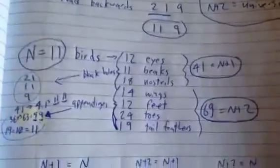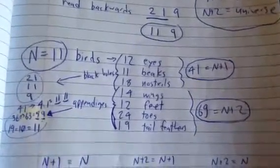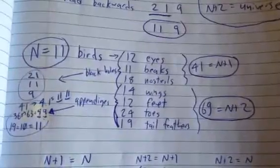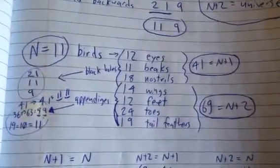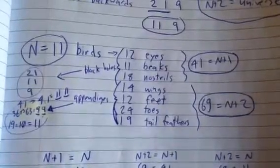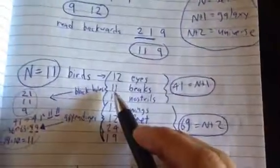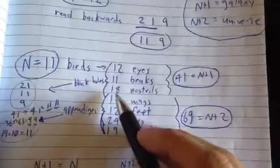Now, this is important. There are N birds. N is equal to 11 birds. Each bird has the following number of black holes. They have 12 eyes, 11 beaks, and 18 nostrils that I can see. The only one with 2 eyes is this guy. It's hard to hide a beak, and 18 nostrils.